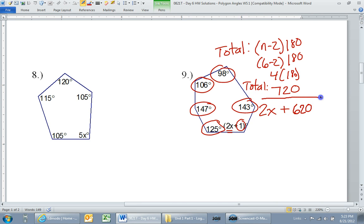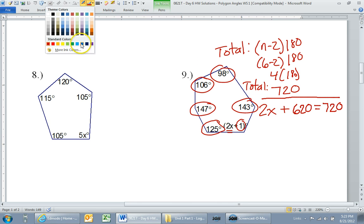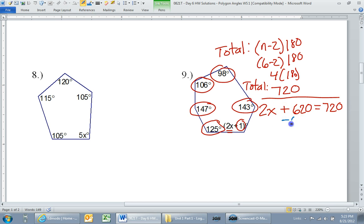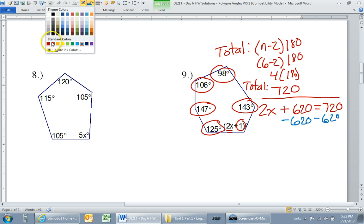Now, of course, all these angles better add up to be 720, because that's supposed to be the total. So 2x plus 620 should equal 720. So then we just go ahead and subtract 620 from both sides.